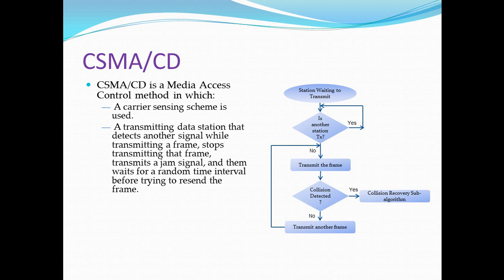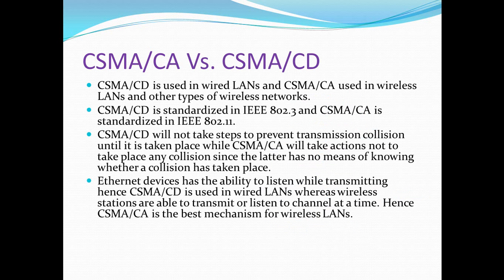Following a collision, a computer waits for the cable to become idle before retransmitting. However, if the computer starts transmitting as soon as the cable becomes free, another collision will occur. Ethernet requires each computer to delay after a collision. The standard specifies a maximum delay and requires each computer to choose a random delay less than the maximum. If subsequent collisions still occur, the computers double the maximum delay until the range is large enough for one computer to choose a short delay and transmit without a collision. This technique is called binary exponential backoff.